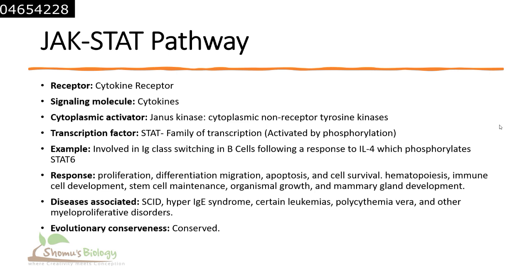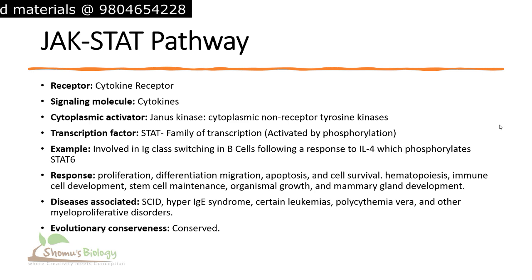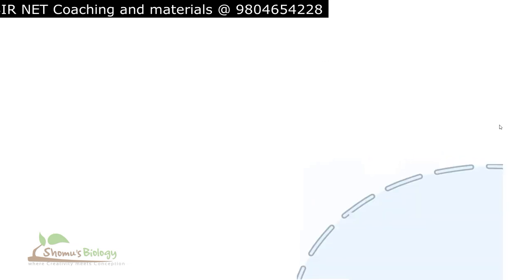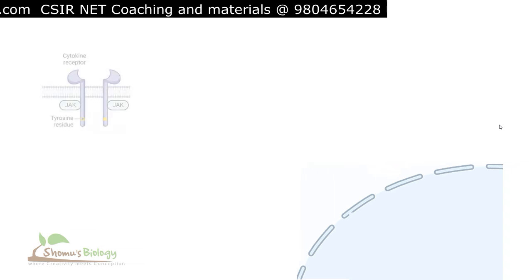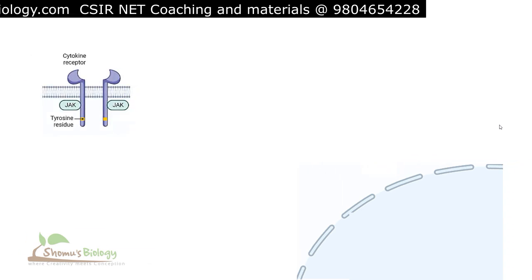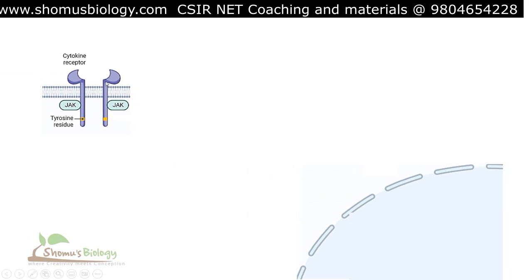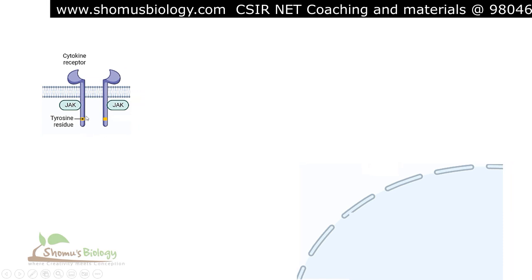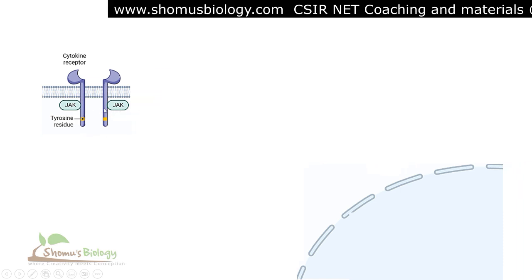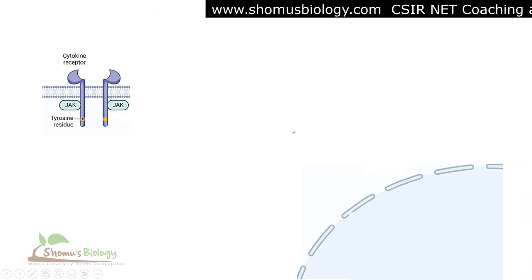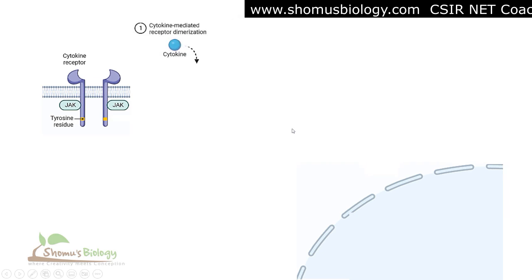Those are the basics of the JAK-STAT pathway. Ultimately, JAK-STAT signaling can cause cells to grow, proliferate, and divide, and is involved in the development of specific organs. Now let's move to the JAK-STAT pathway animation. The process starts with the receptor — in this case, the cytokine receptor. You can see it has a signal-binding domain and a cytosolic domain where JAK can associate, along with tyrosine residues in the cytosolic site.